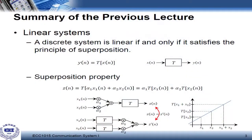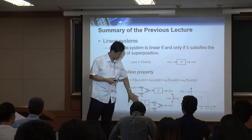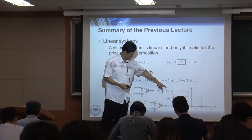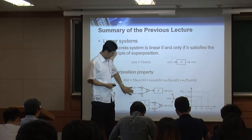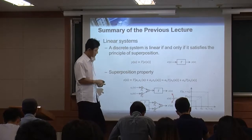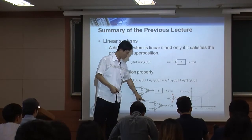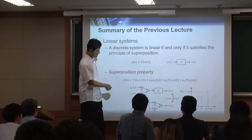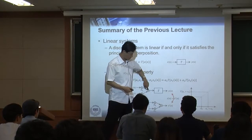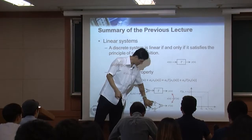We also briefly reviewed linear systems. One thing to remember about a linear system is the superposition property. We have two inputs and one output. You can first add the two inputs and put that into the system to get a certain output. Alternatively, you can put each input separately into the system to get two different outputs and add them at the output.